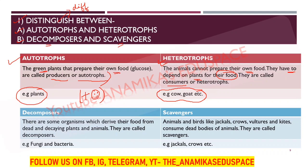Distinguish between decomposers and scavengers. Decomposers are organisms which derive their food from dead and decaying plants and animals. Scavengers are animals and birds — like the jackal, crow, vulture, and kite — that consume the dead bodies of animals.